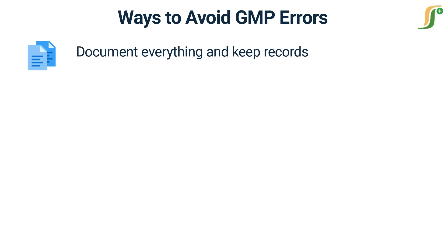Document everything and keep records. Keeping detailed and accurate documentation is essential for ensuring compliance with GMP regulations. This includes documenting all procedures, processes, and activities that take place during manufacturing. It's also important to ensure that all documentation is easily accessible and can be retrieved quickly if needed.